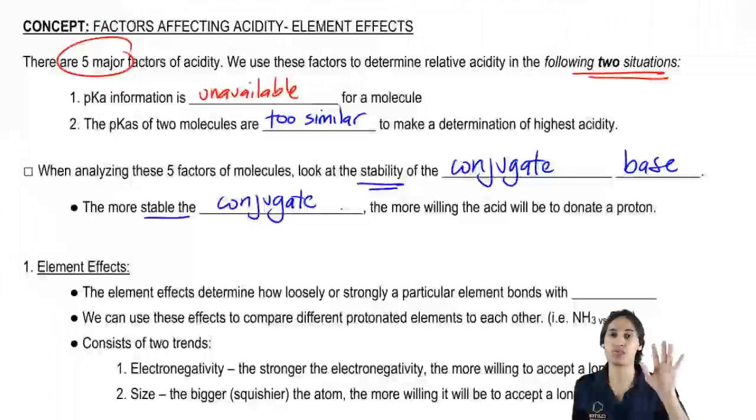And that's what these five effects have to do with. They are going to either increase the stability or decrease the stability of the conjugate base.